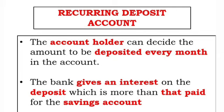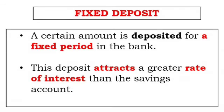The account holder can decide the amount to be deposited every month in the account. The bank gives an interest on the deposit which is more than that paid for the savings account. A depositor deposits a certain amount for a fixed period in the bank. This deposit attracts a greater rate of interest than the savings account. These rates are different in different banks, but senior citizens get a slightly greater rate of interest than usual.